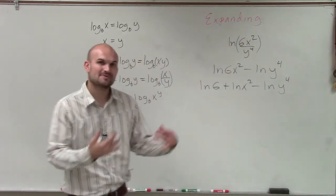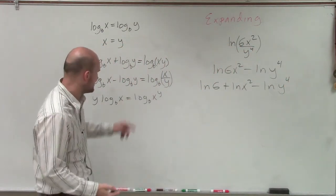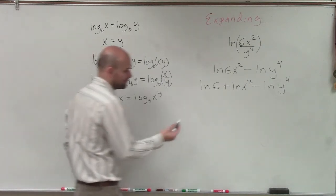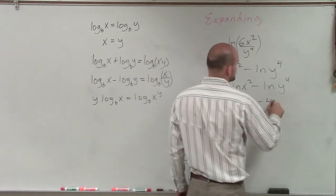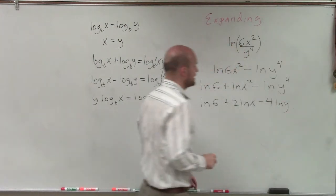Now my last step is I can take my powers and I can rewrite them as the product of my logarithm. So therefore, I have ln of 6 plus 2 ln of x minus 4 ln of y.